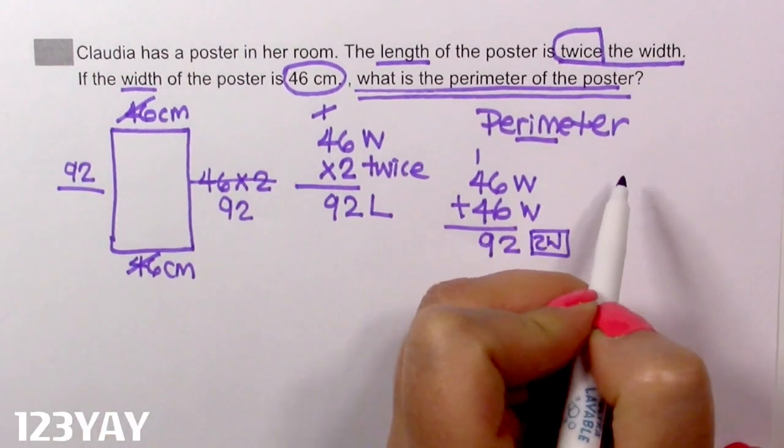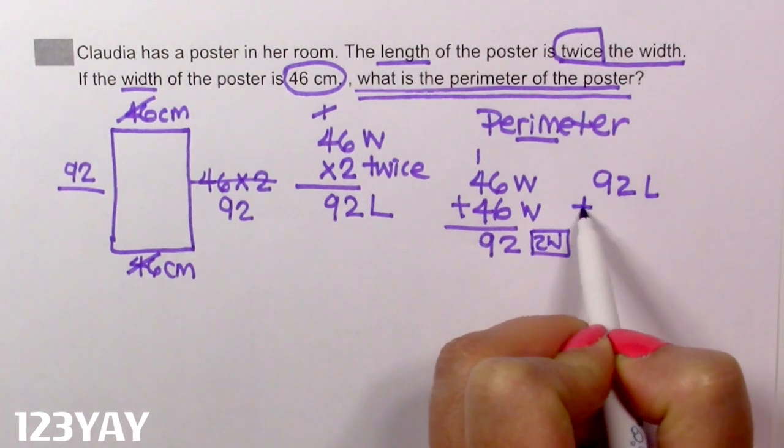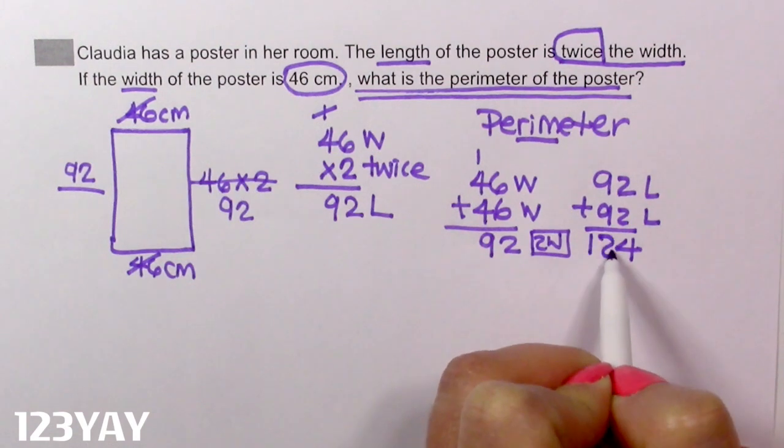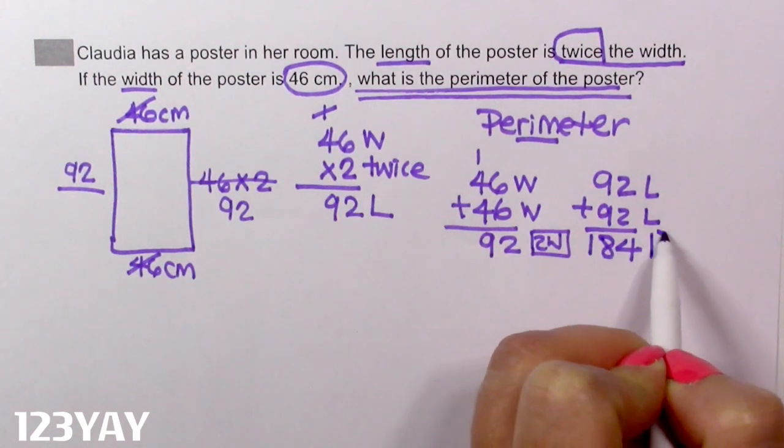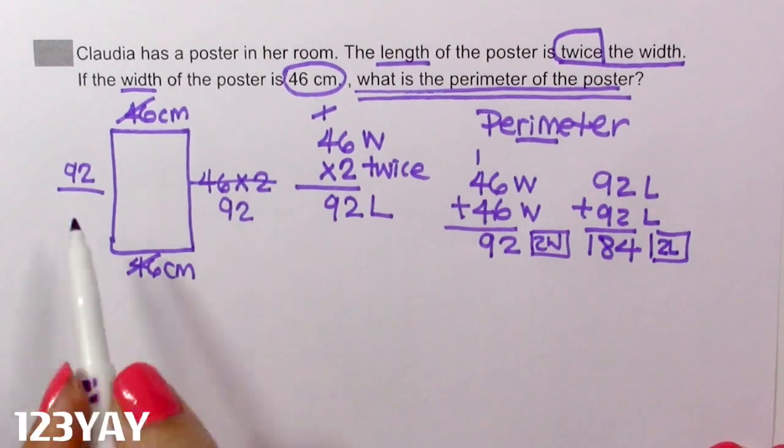92 plus 92. Equals 2, 184. These are the 2 lengths. Are we done? No.